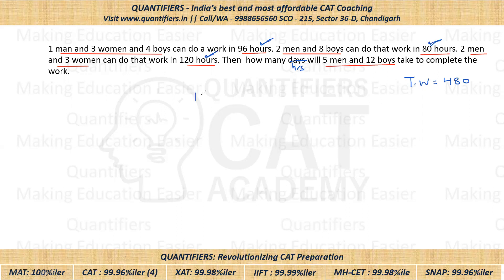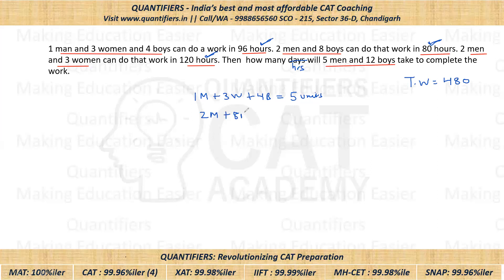Now, one man plus three women plus four boys will be doing 480 divided by 96, which equals 5 units per hour. Similarly, two men and eight boys will be doing 480 divided by 80, which equals 6 units per hour. And for the third group, two men and three women will be doing 480 divided by 120, which equals 4 units per hour.